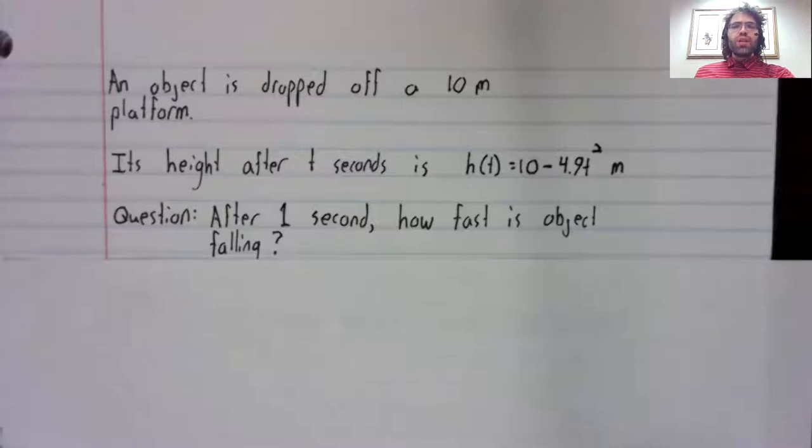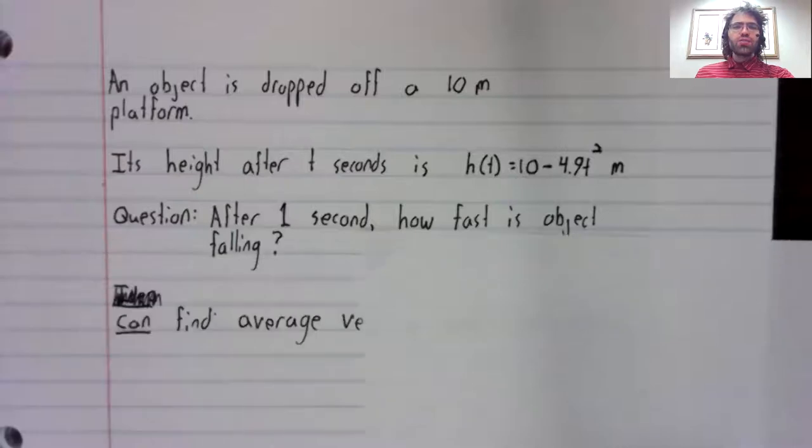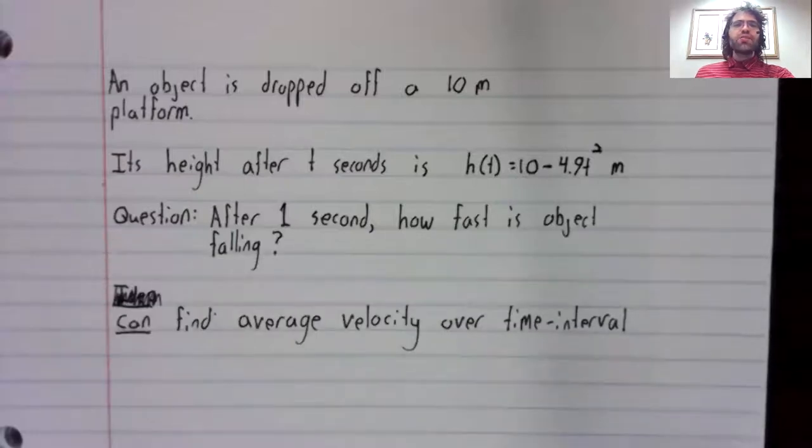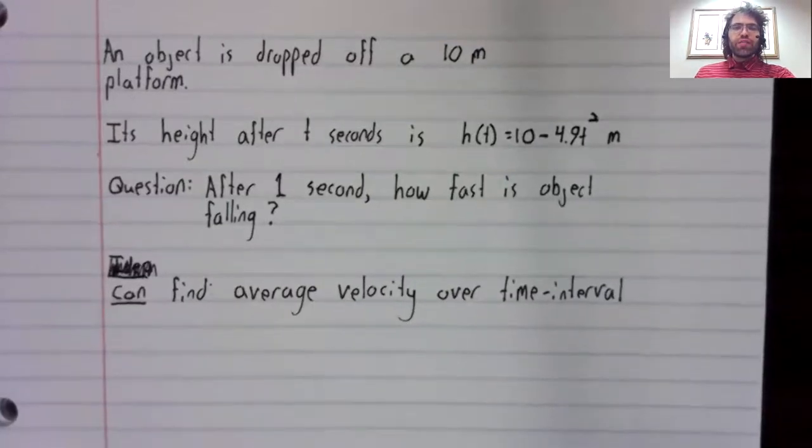Well, what we do have available to us is average velocity. The average velocity of this object on a time interval is its average rate of change on that time interval.